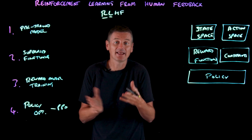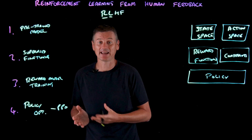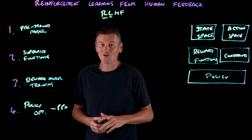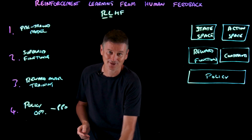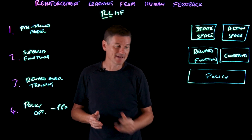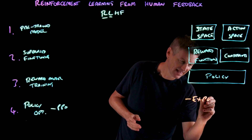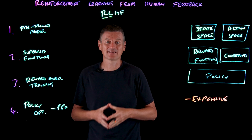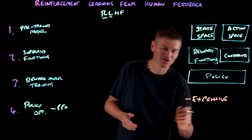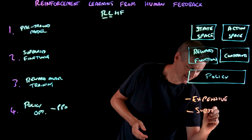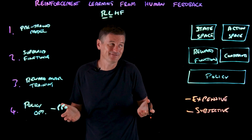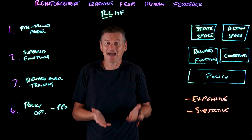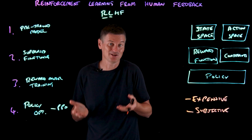Though RLHF models have demonstrated impressive results for complex tasks from robotics and video games to NLP, using RLHF is not without its limitations. Gathering first-hand human input can be quite expensive and creates a costly bottleneck that limits model scalability. Additionally, human feedback is highly subjective — it's difficult, if not impossible, to establish firm consensus on what constitutes high-quality output, as human annotators will often disagree on what high-quality model behavior should actually mean.